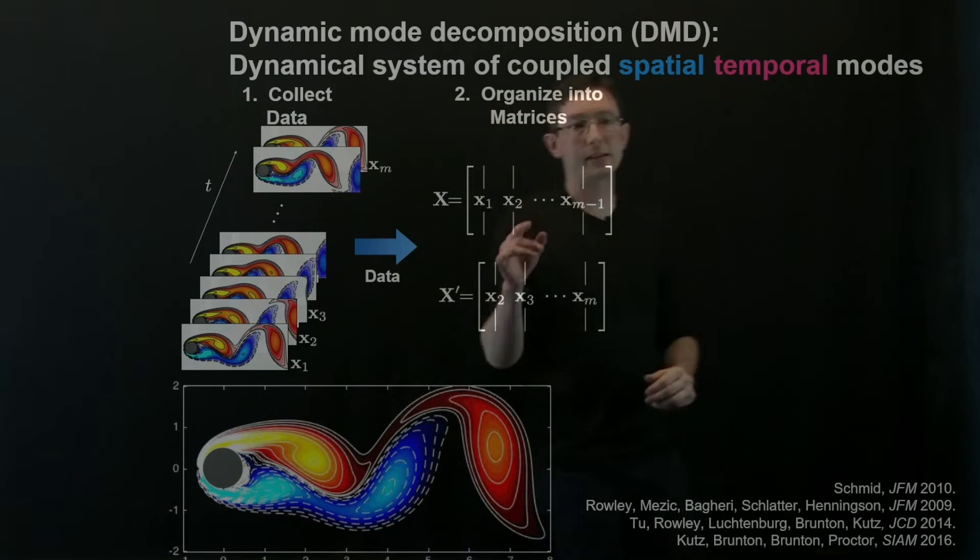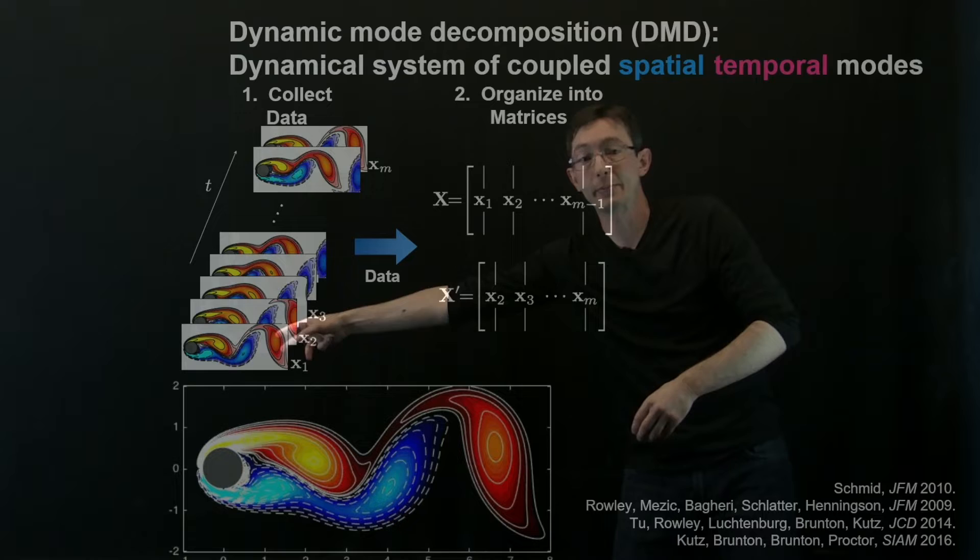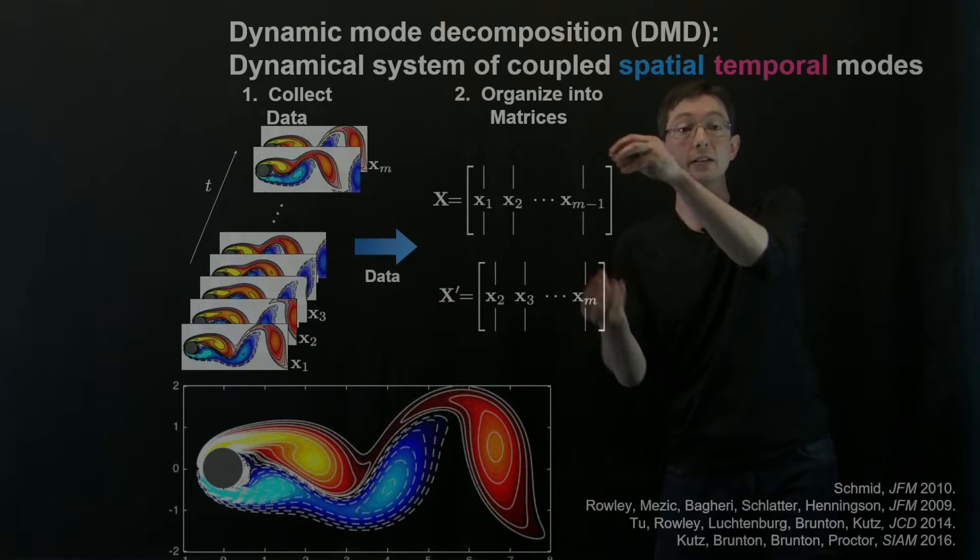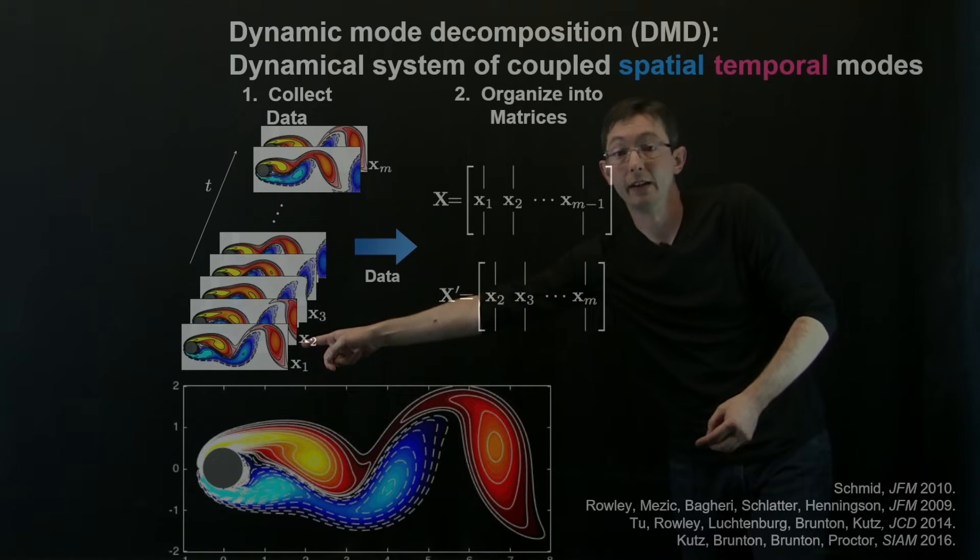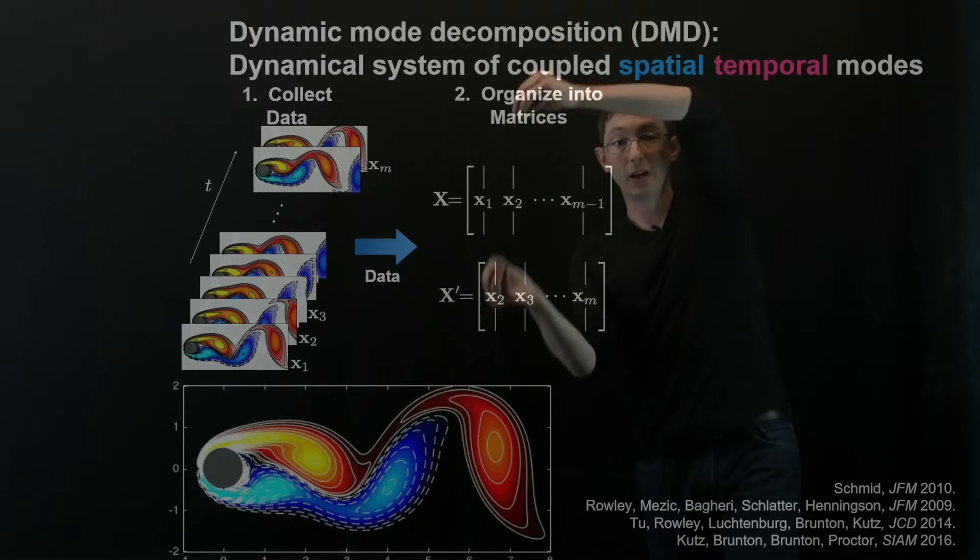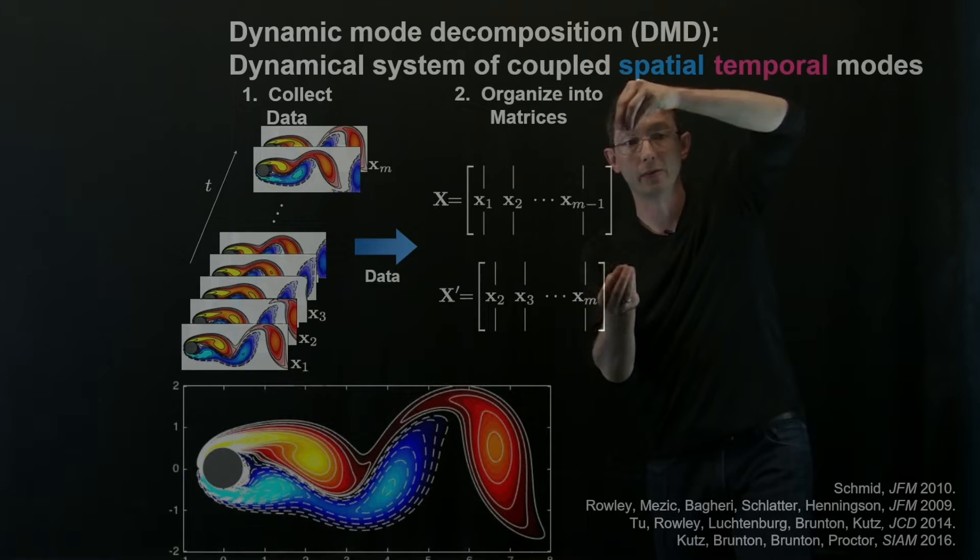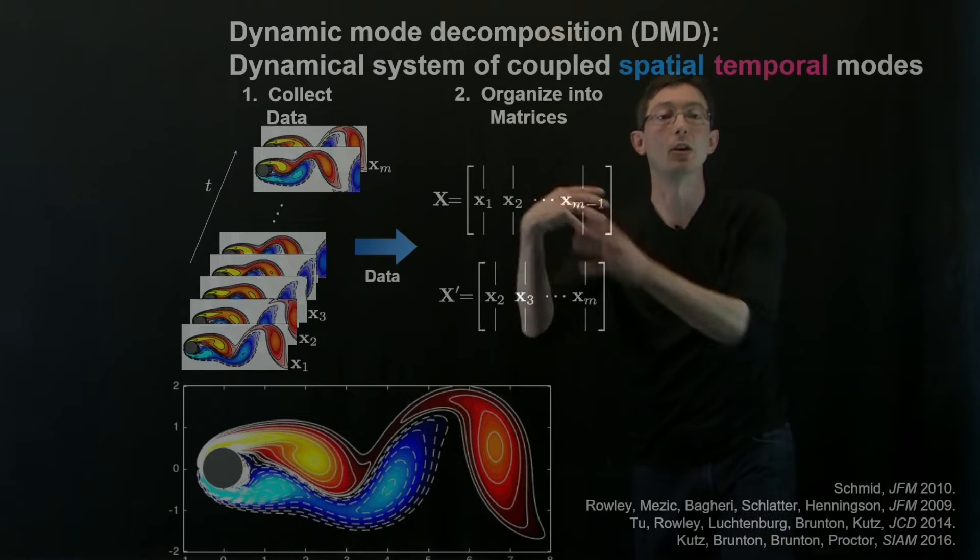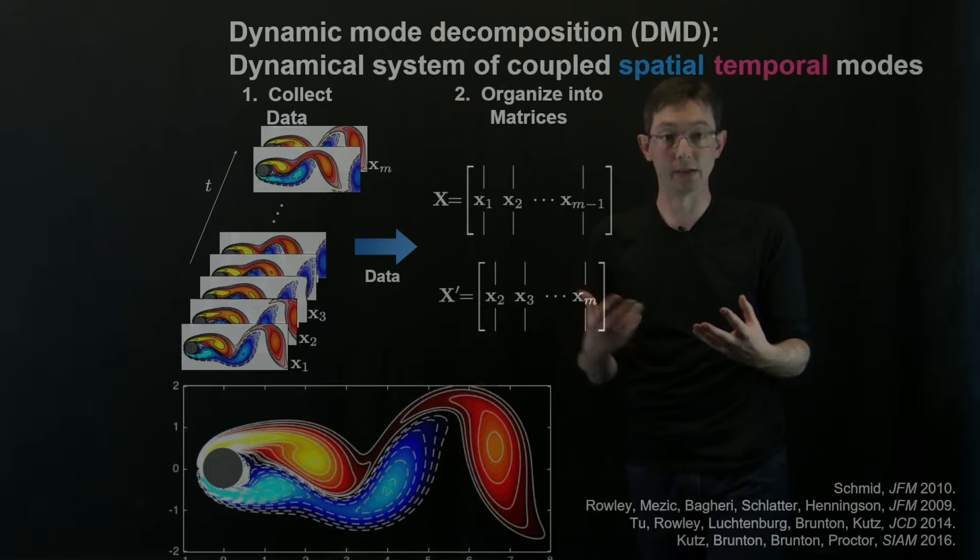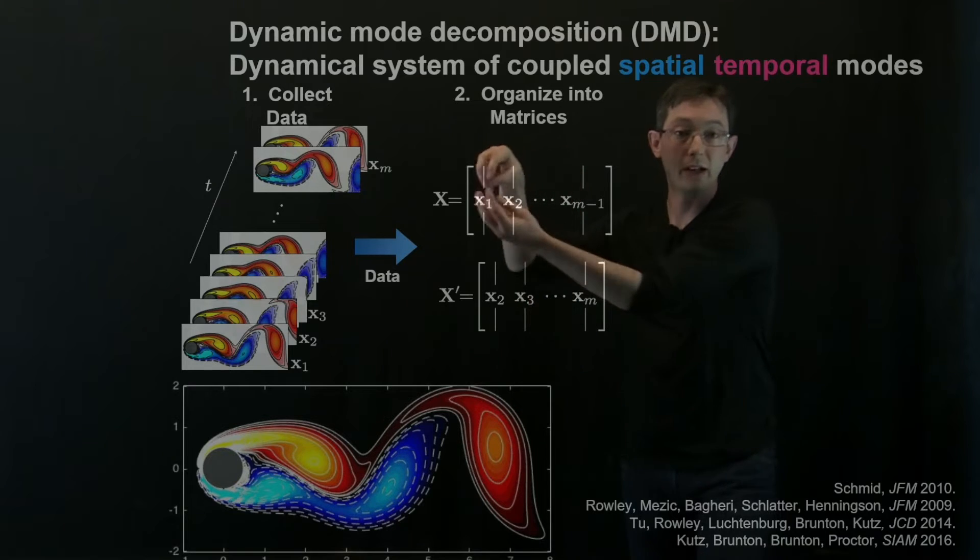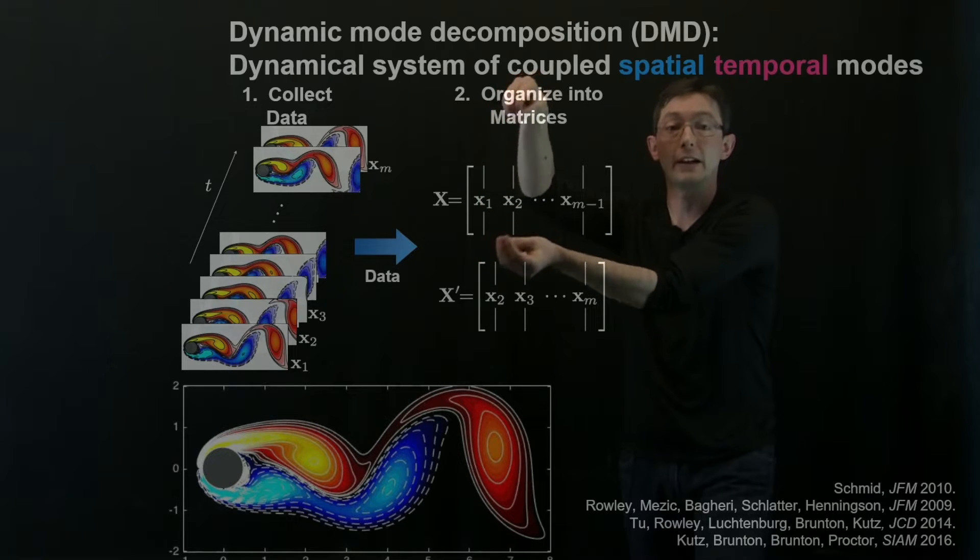Then what I do is I organize this data into these big matrices X and X prime. So the columns of the X matrix are essentially the columns of my data reshaped into, sorry, my snapshots of data reshaped into very, very tall column vectors that are evolving in time. So X one is a big column vector where I take my flow field at time one and I reshape it into a tall column vector. X two is the next snapshot, X three is the next snapshot and so on and so forth. So the columns are essentially evolving in time along with the dynamics of the system.